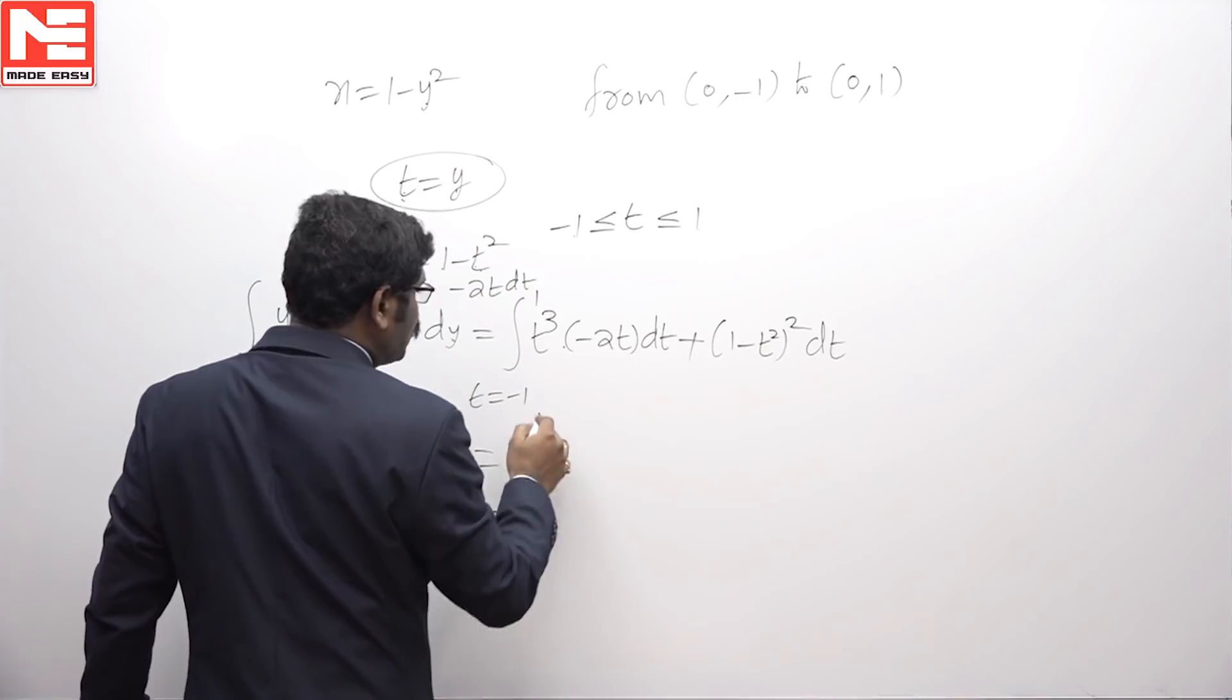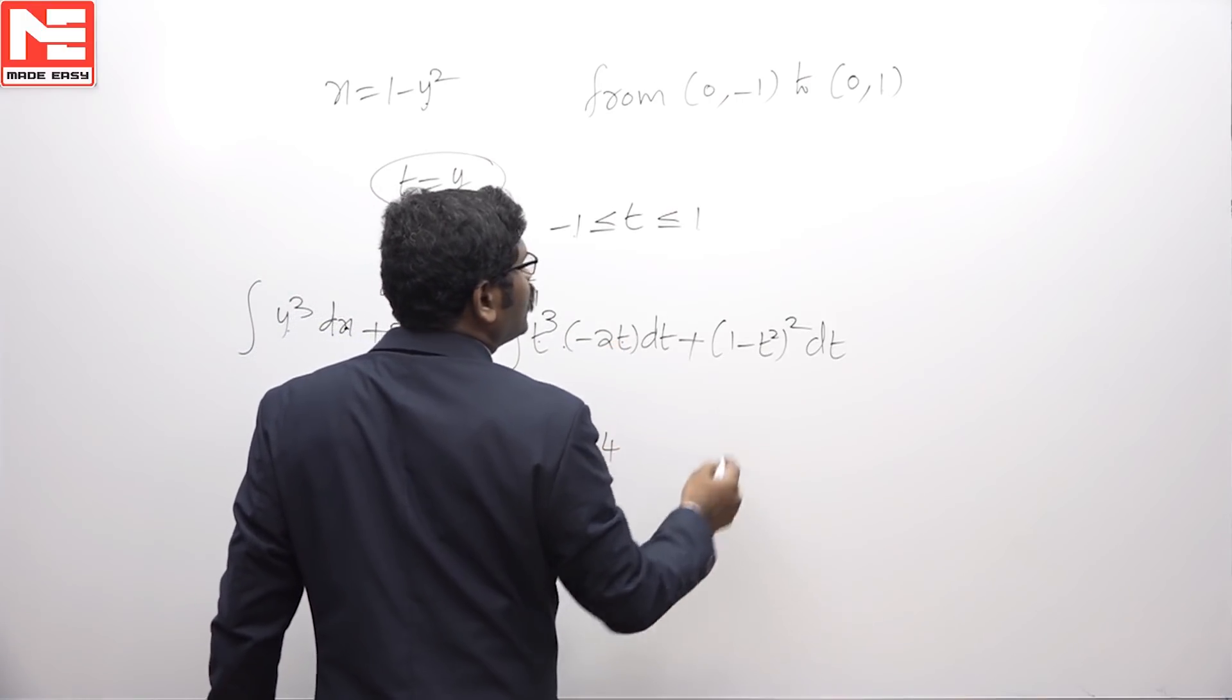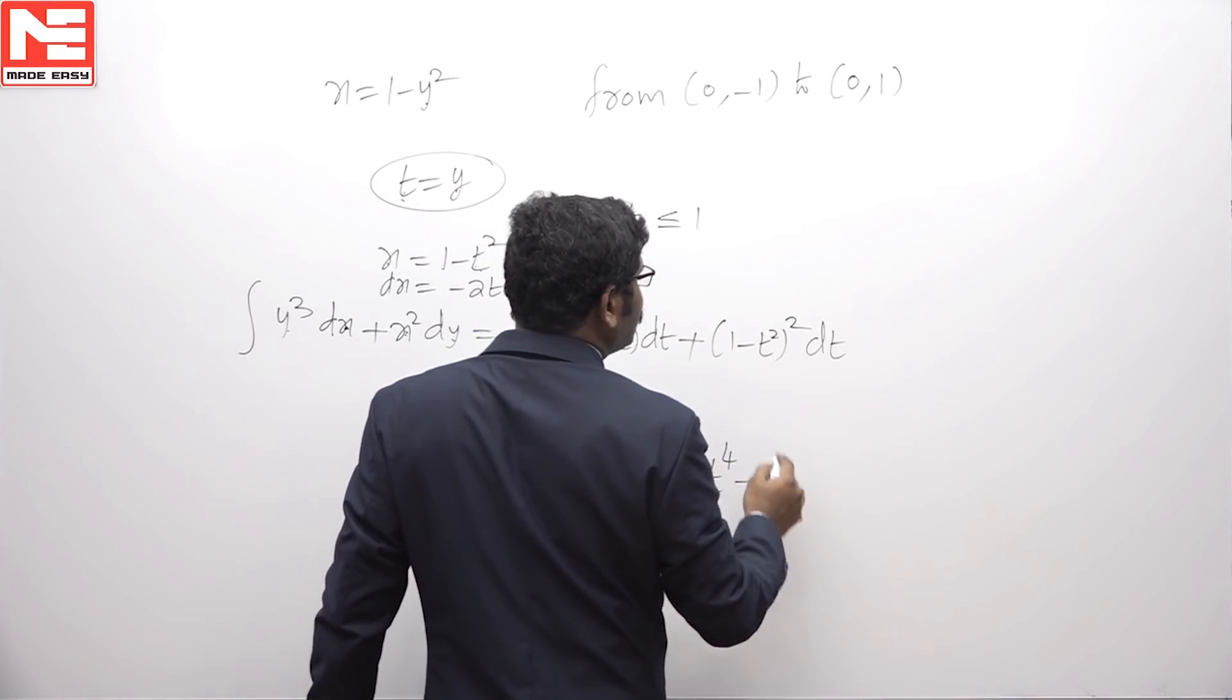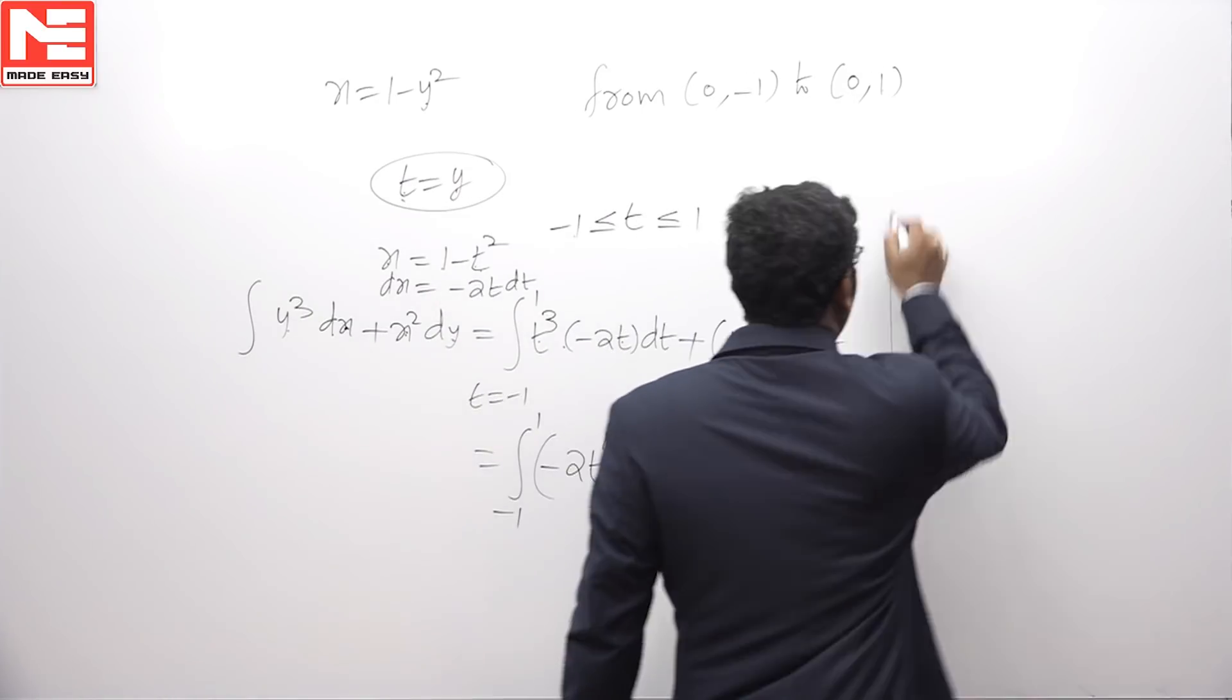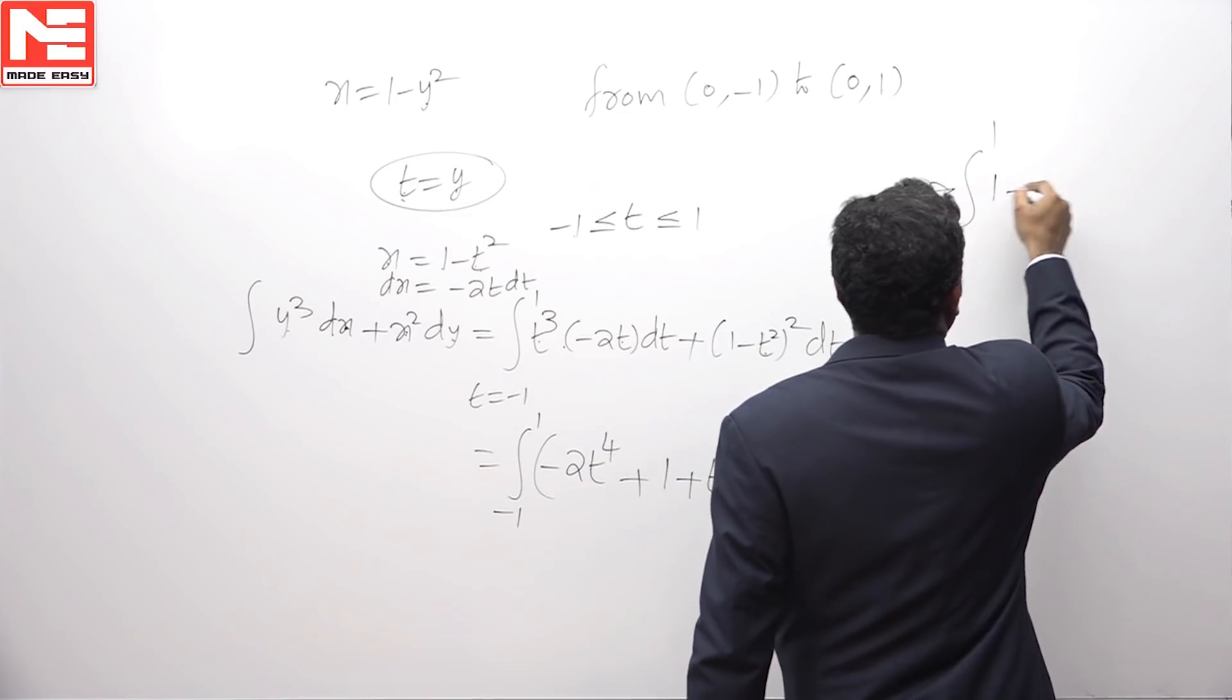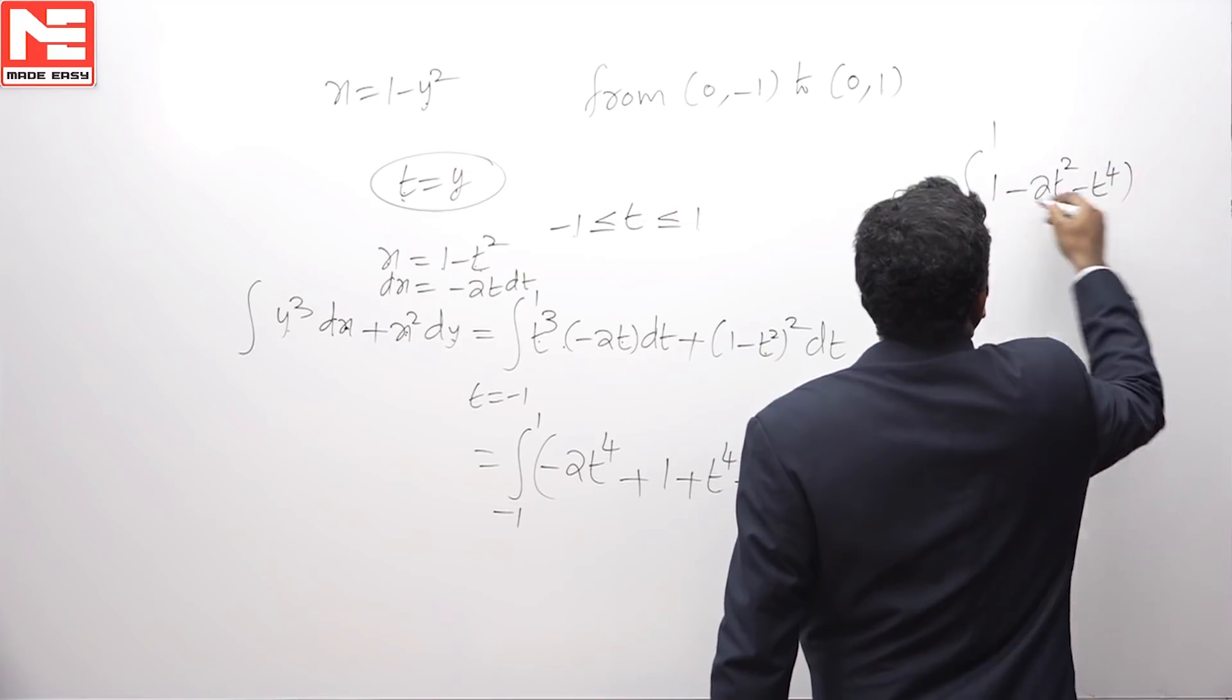The integral from -1 to 1 of -2t⁴ + 1 + t⁴ - 2t² dt, which simplifies to the integral from -1 to 1 of 1 - 2t² - t⁴ dt.